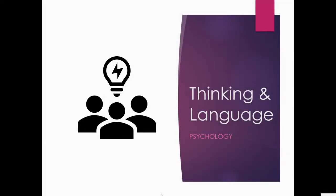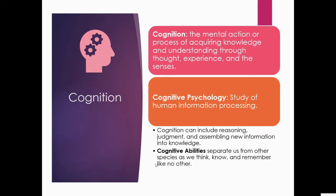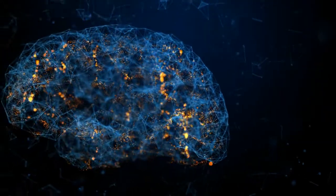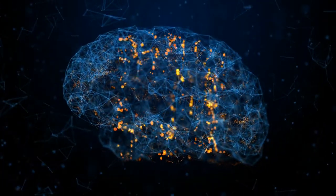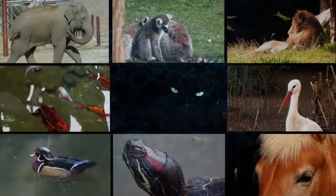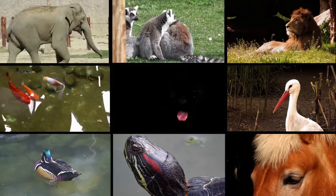Welcome to a lecture on thinking and language for psychology. Today we're going to be focusing on cognition. Cognition is the mental action or process of acquiring knowledge and understanding through thought, experience, and the senses. Cognitive psychology is simply the study of human information processing — what is your brain doing when thinking? Cognition can include reasoning, judgment, and assembling new information into knowledge. Our cognitive ability separates us from other species as we can think, know, and remember like no other.